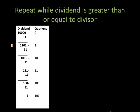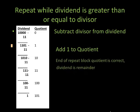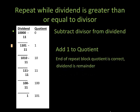We are repeating these steps, as shown in the illustration. We repeat while the dividend is greater than or equal to the divisor, subtracting the divisor from the dividend and adding one to the quotient. At the end of the repeat block, the quotient is correct and the dividend is the remainder, at which point we stop.